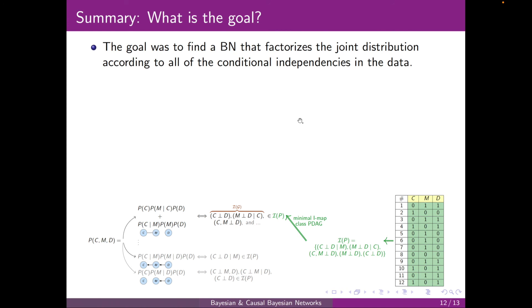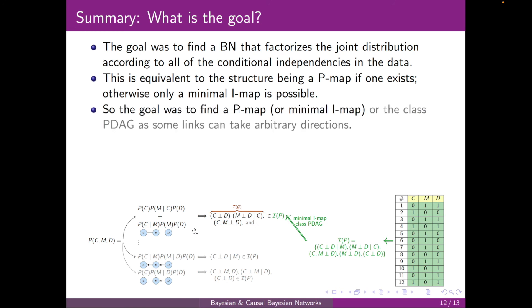Back to our roadmap, in the representation chapter, our goal was to find a Bayesian network that factorizes the joint probability distribution according to all of the conditional independencies in the data. And this was equivalent to the structure being a P-map, if one exists, or a minimal I-map.